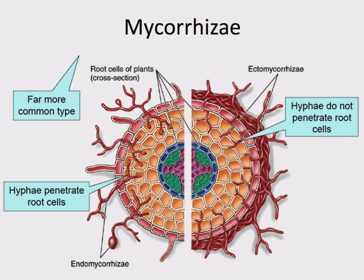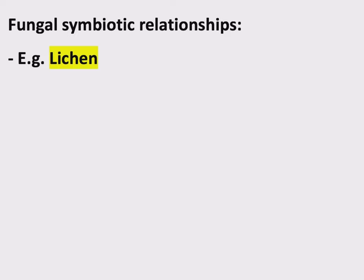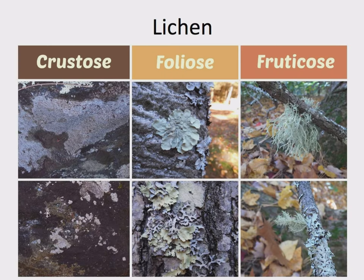Another common fungal symbiotic relationship is lichen. There are many types of lichen in different shapes and sizes — crustose, foliose, and fruticose. Lichen itself is defined in the key terms as a close association of a fungus with a photosynthetic alga or bacterium. That's kind of generic because the actual partner that the fungus can have varies widely. It can be a bacterium, it can be an alga — which could mean plant or protist. The important thing is that the partner is something that does photosynthesis.